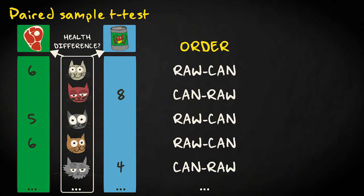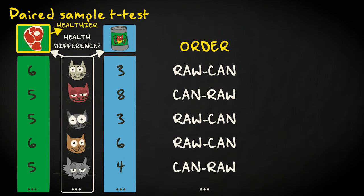Then I switch all the cats to the opposite diet. After two months, I measure their health again. I now have two health measurements for each cat — one after eating raw and one after eating canned food for two months. I expect the raw diet to result in better health scores compared to the canned food.